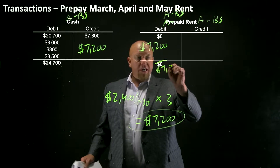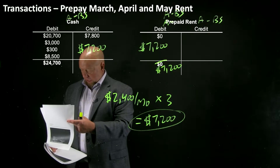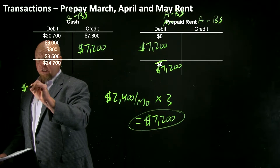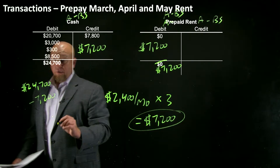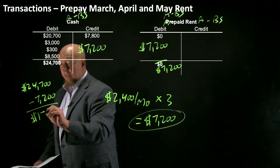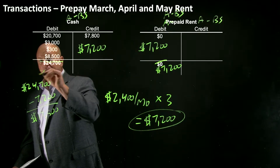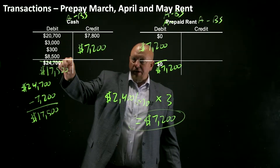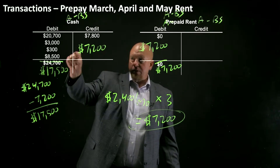After this transaction, prepaid rent has a $7,200 balance. The cash balance was $24,700, we made a credit entry of $7,200, so the new cash balance is $17,500. Just to review: you take the previous balance, subtract the credit entry, and that gives you the new debit balance.